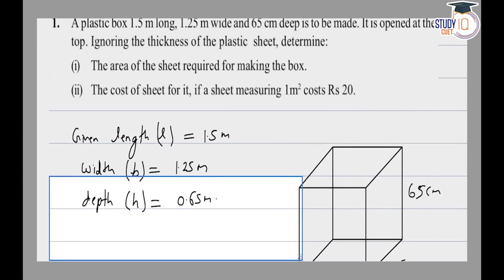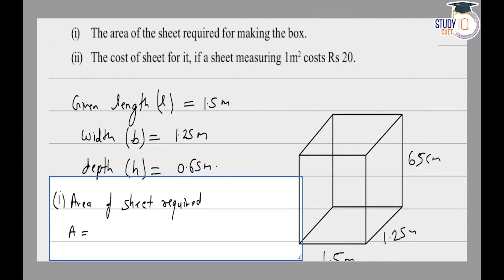We need to find the area of 5 faces. The area of the first part — seat required — is equal to two times length into height plus two times width into height.